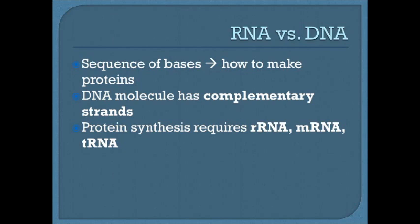In RNA, base pairing occurs between adenine and uracil (A-U), and guanine and cytosine (G-C). Protein synthesis requires rRNA (ribosomal RNA), mRNA (messenger RNA), and tRNA (transfer RNA). rRNA is where mRNA binds in the ribosome. mRNA transcribes the complementary DNA strand into an RNA strand. tRNA then translates the RNA sequence into amino acids to build a protein.